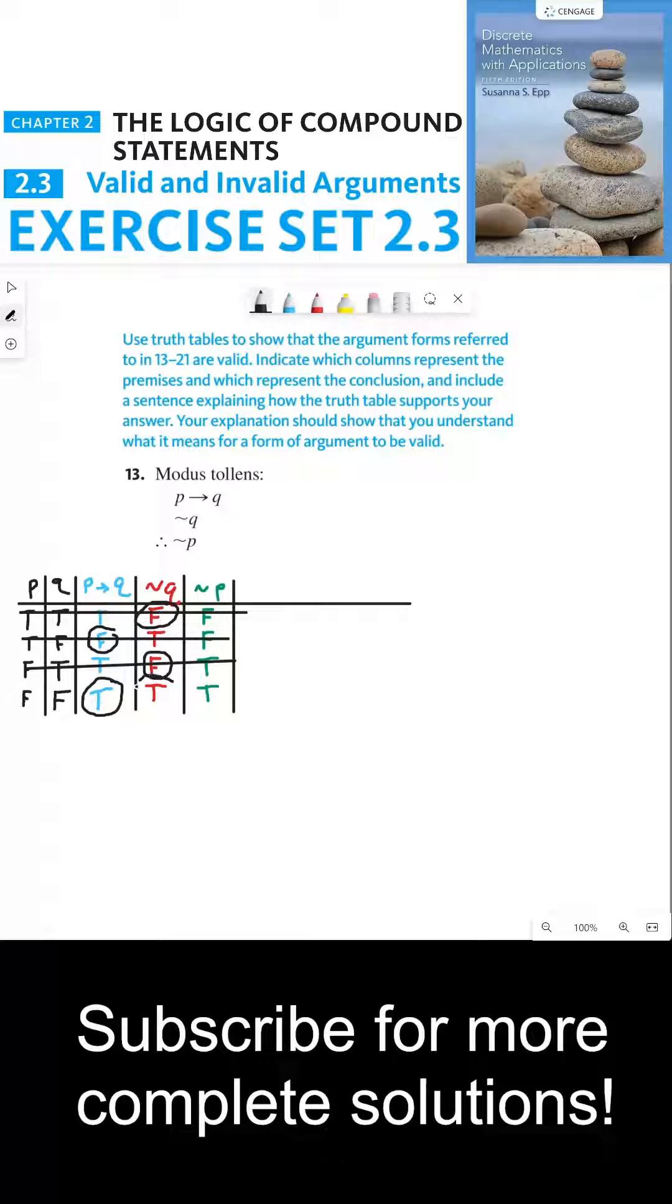And on the last line, both assumptions are true, which means that the conclusion has to be true in order for this to still be valid, which is the case. So every time the assumptions are true, the conclusion is therefore true, which is exactly what we wanted to show.